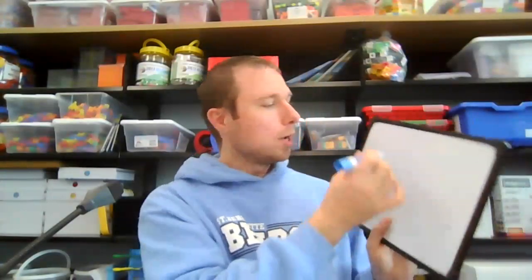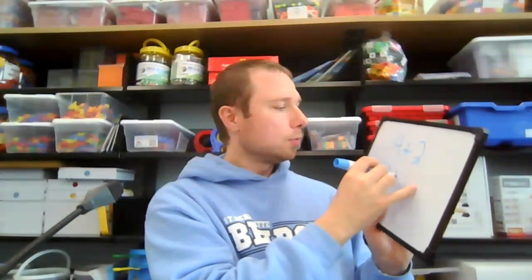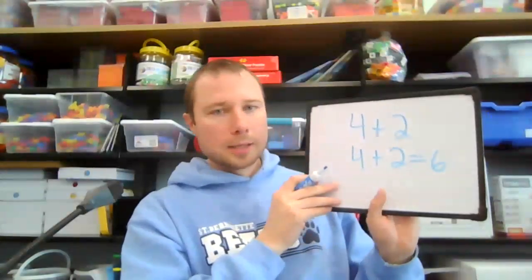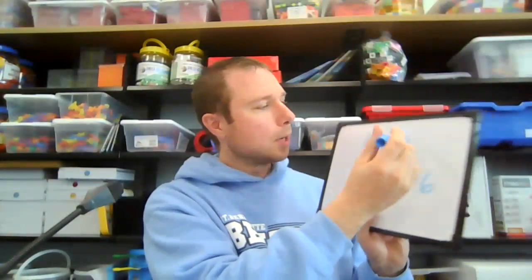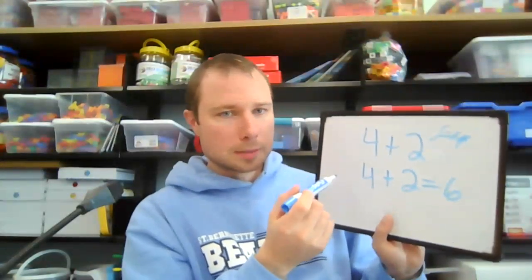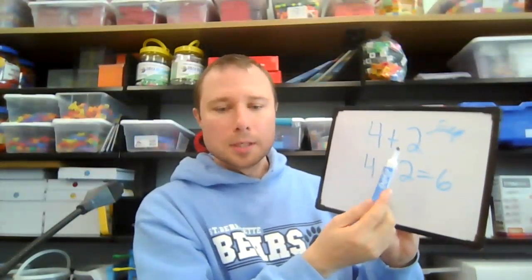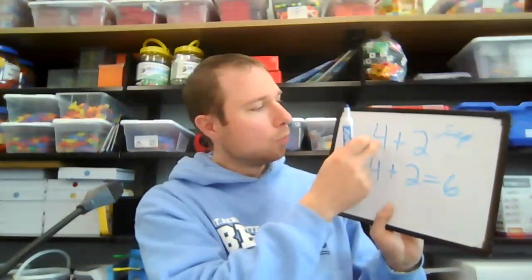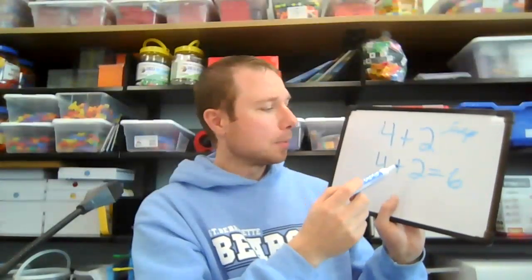Next we talk about expression versus equation. An expression just has the question part — for example, four plus two is an expression. An equation would include the equals sign and the answer. We talked about labeling: tell me what you're actually showing me. There are four points for that question — one for the expression, one for the equation, and one each for identifying and labeling them correctly.